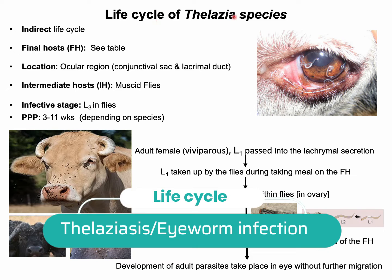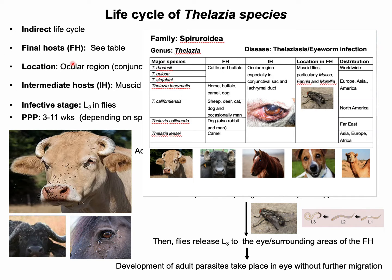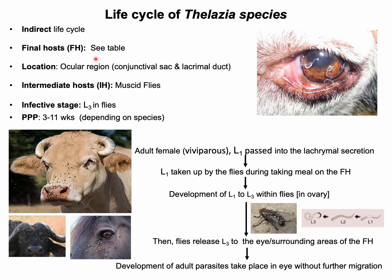The life cycle of Telagia species is indirect, as there is involvement of an intermediate host. Final hosts include cattle, buffalo, horse, dog, and various other animals. The predilection site for this parasite is the conjunctival sac and the lacrimal duct of the eyes. Different species of musca fly are involved as intermediate hosts. The infective stage is L3.